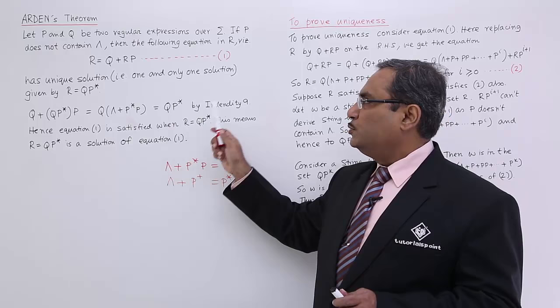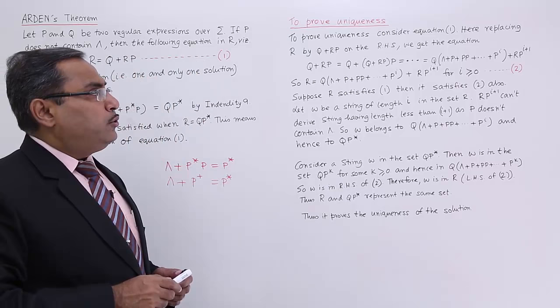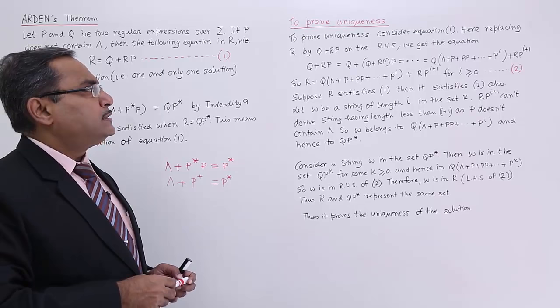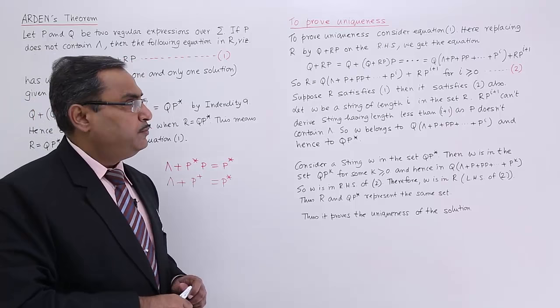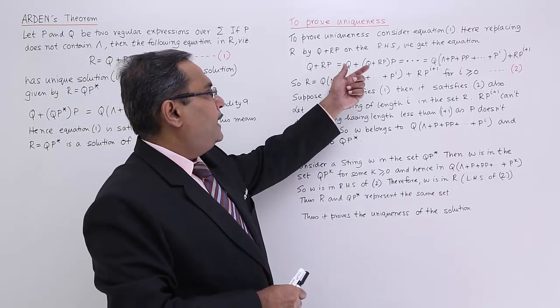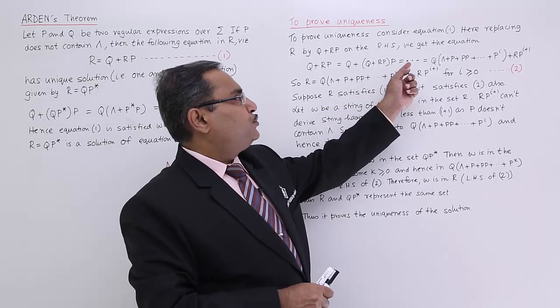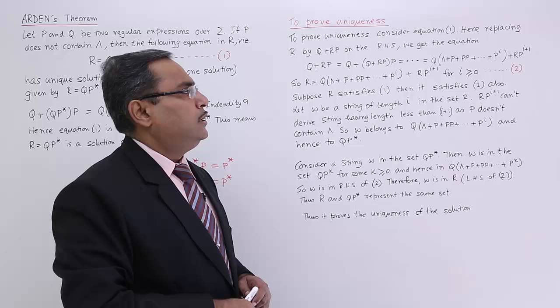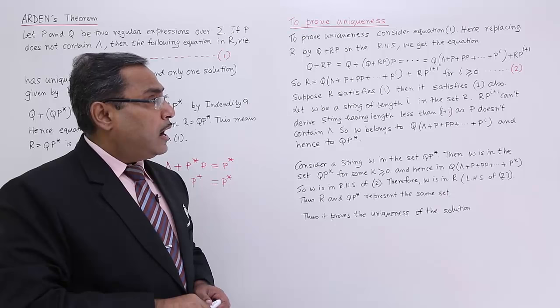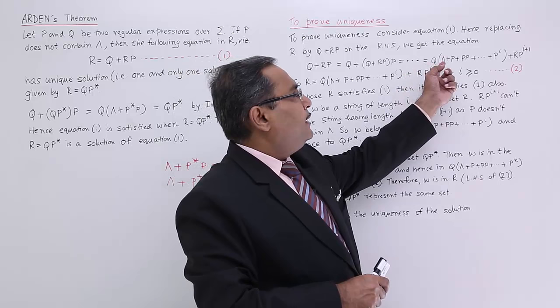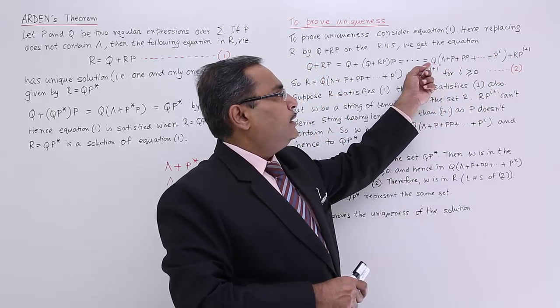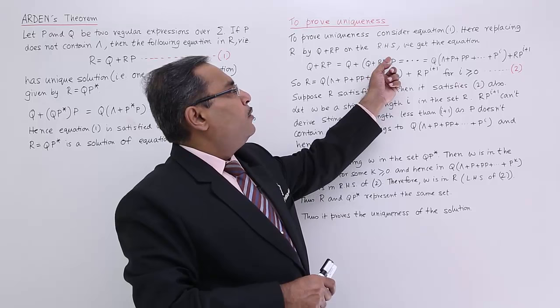To prove uniqueness, consider equation 1. Replacing R by Q + RP on the right-hand side recursively, we get Q + (Q + RP)P, and if we proceed, we get R = Q(kappa + P + PP + ... + P^i) + RP^(i+1). By going on replacing R by Q + RP each time, we generate kappa + P + PP + ... + P^i, with Q taken common and R·P^(i+1) remaining at the end. This holds for i ≥ 0, and we mark this as equation 2.